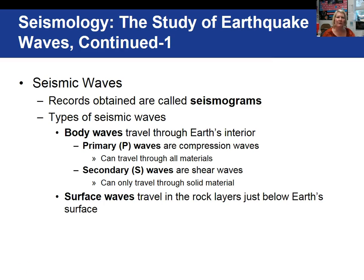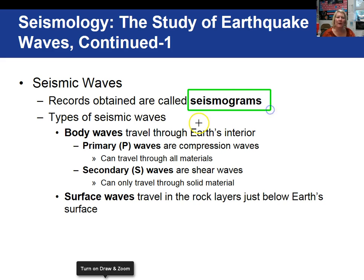Welcome back geologists, this is Professor Rood and I am going to start Video 2 for Chapter 11 on earthquakes. Today we're going to look at different types of seismic waves. The actual recording obtained from a seismograph is called the seismogram, and the seismogram has recorded on it different types of waves. The two main types of seismic waves are called body waves and surface waves.